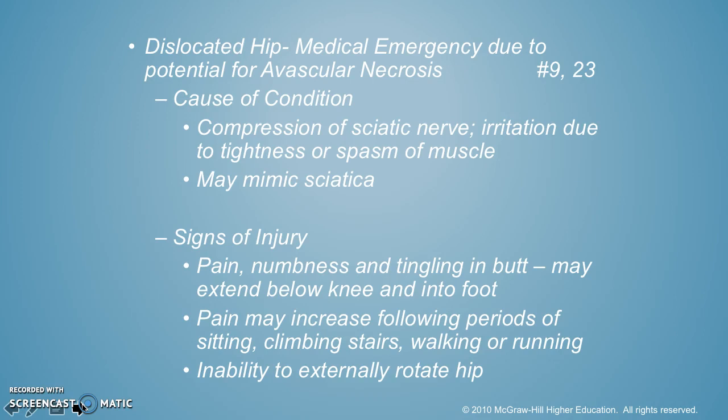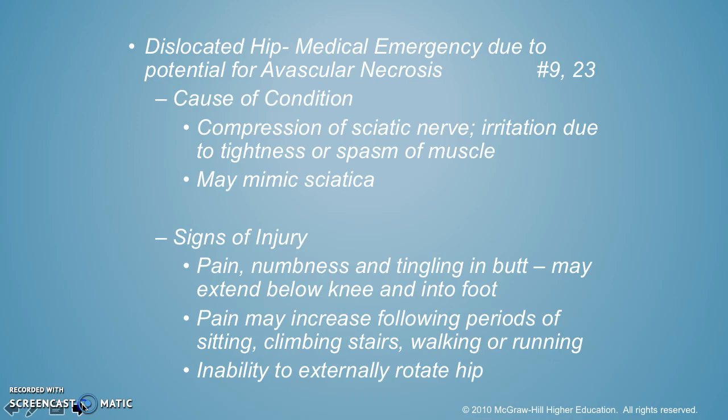The cause is the compression of the sciatic nerve, and it gets irritated due to the spasm of the muscle. It could actually mimic sciatica. There's pain, numbness, and tingling in the butt that may go down into the foot. It might increase following periods of sitting, climbing stairs, walking, or running. They can't externally rotate their hip very well — their hip is kind of internally rotated with one knee towards the other. It is a medical emergency for sure.